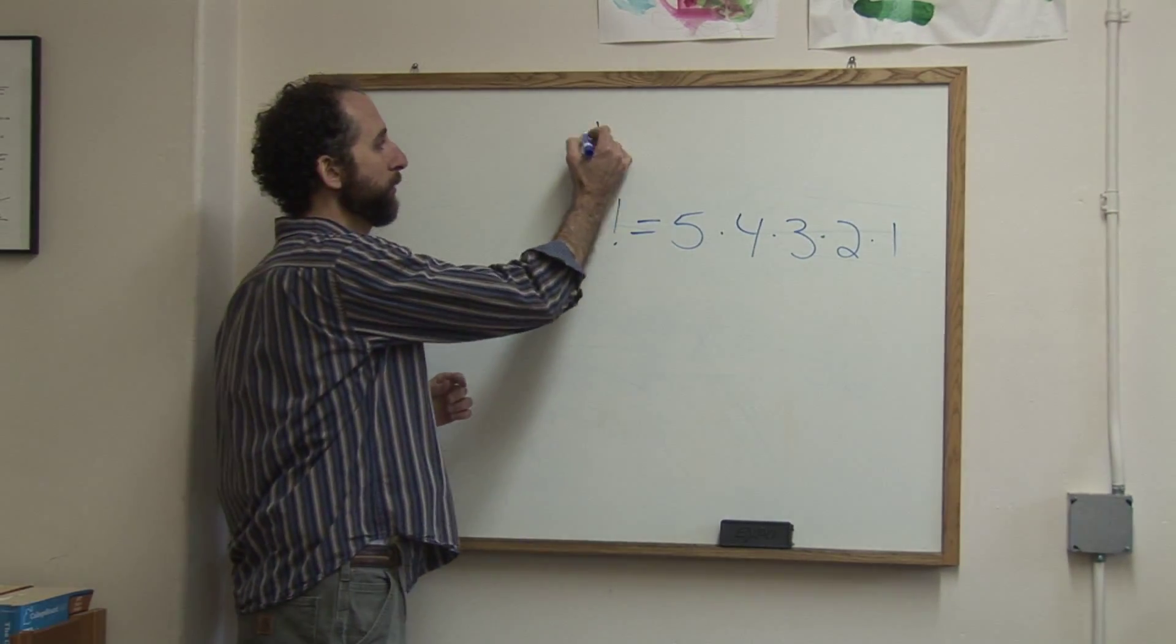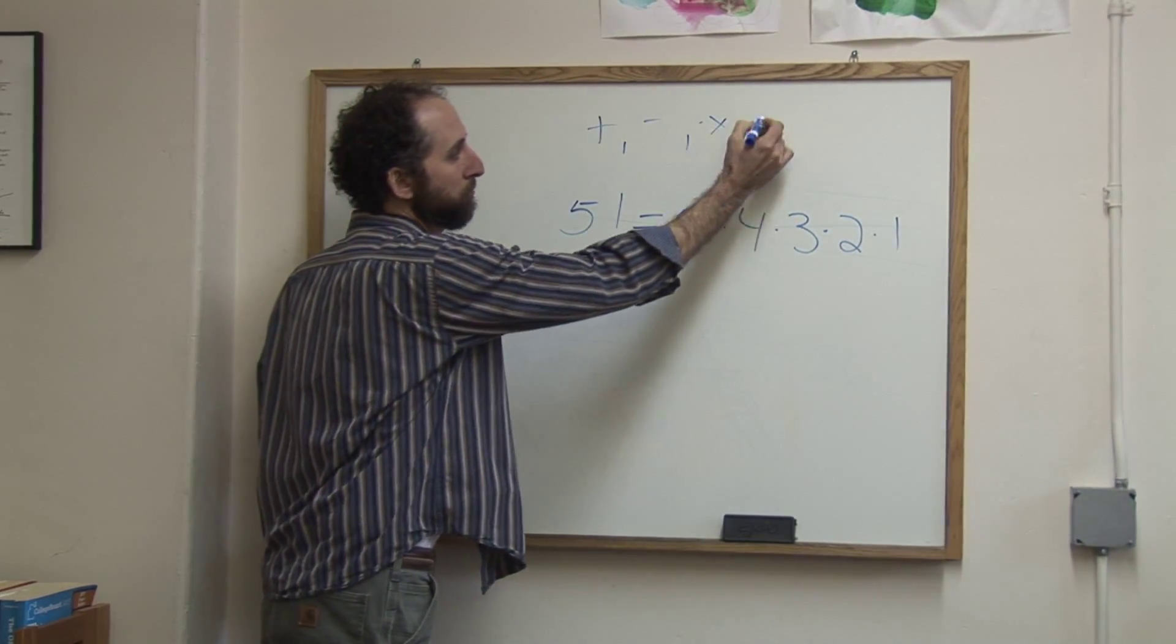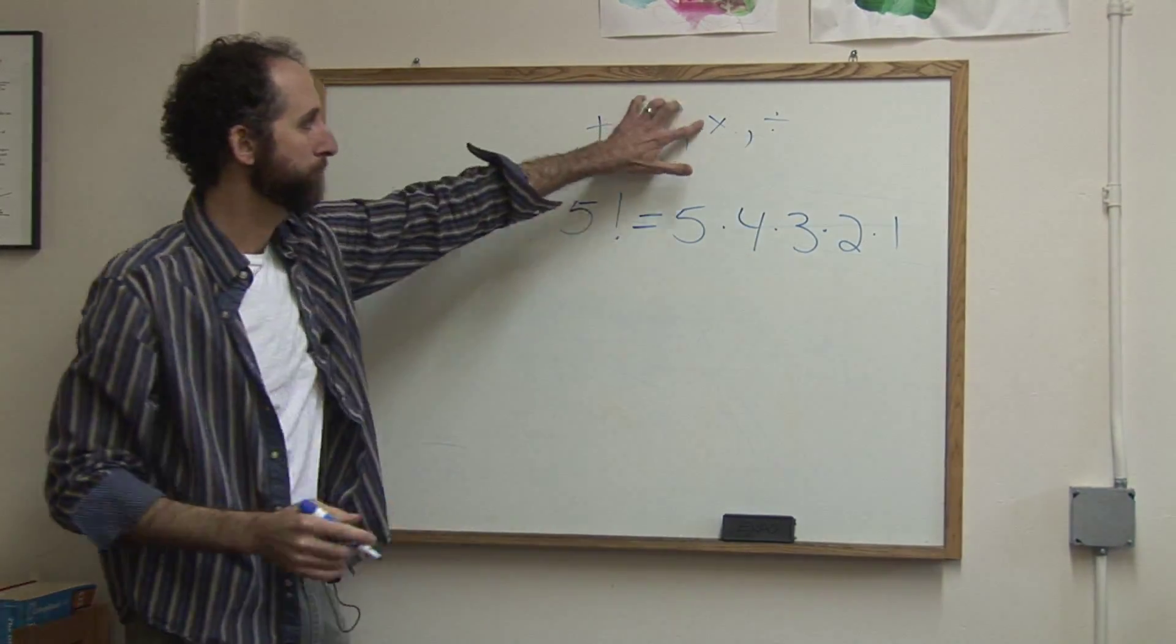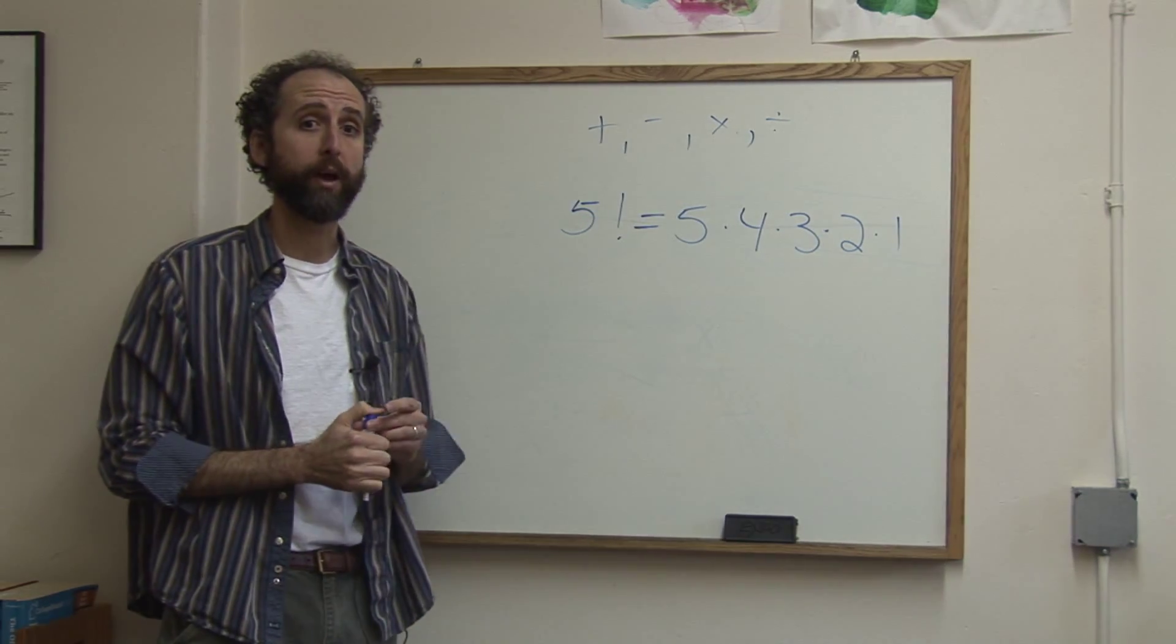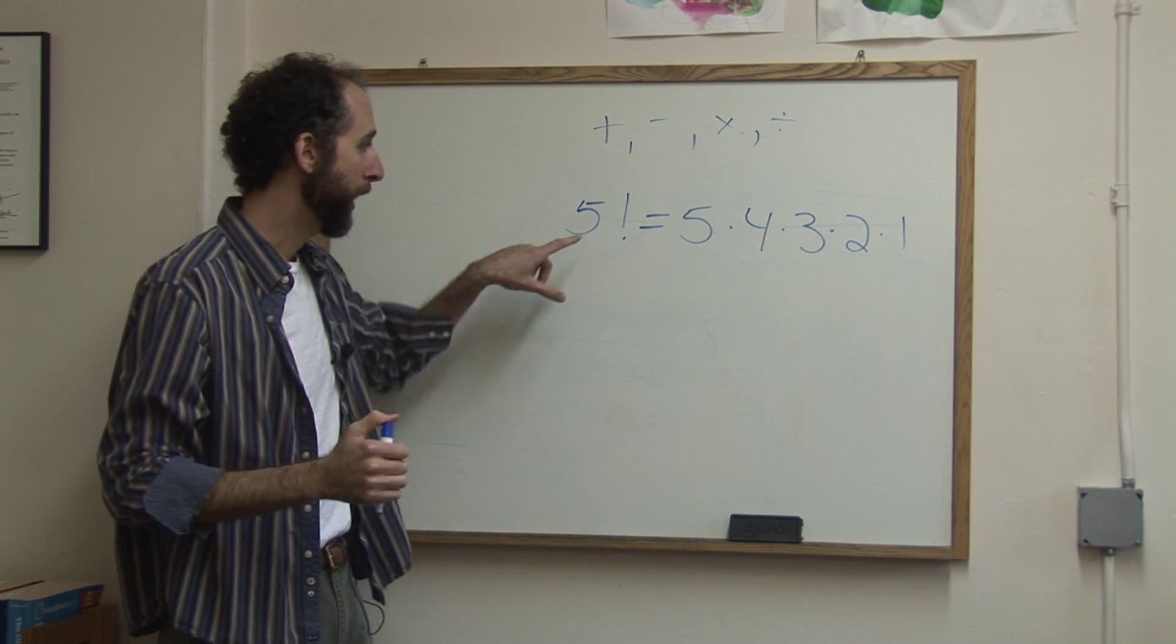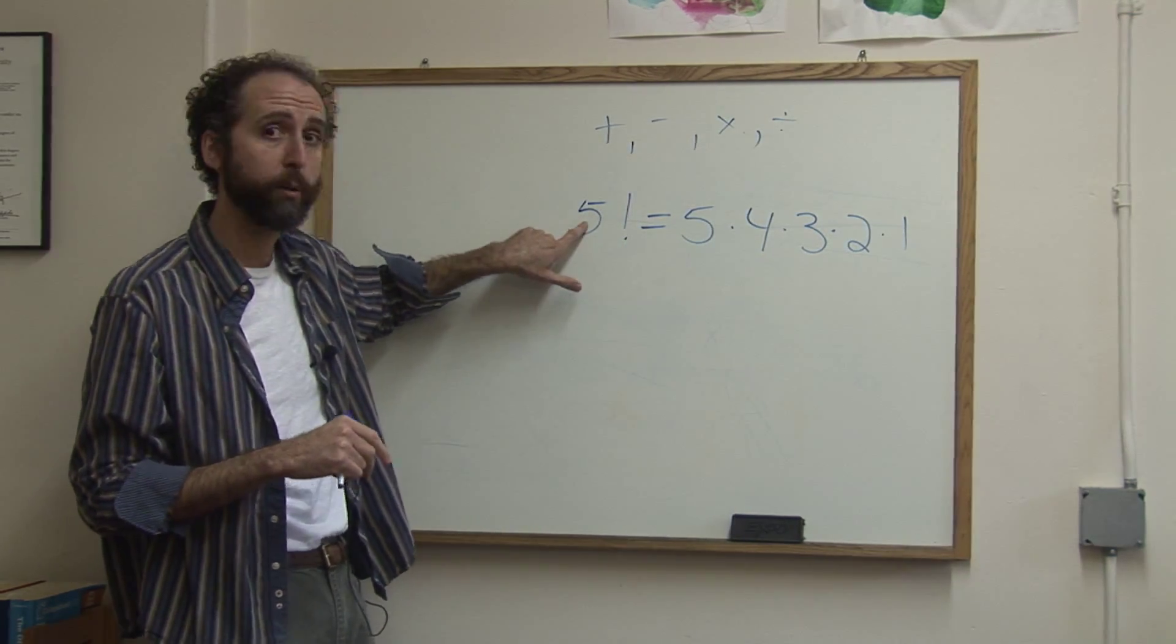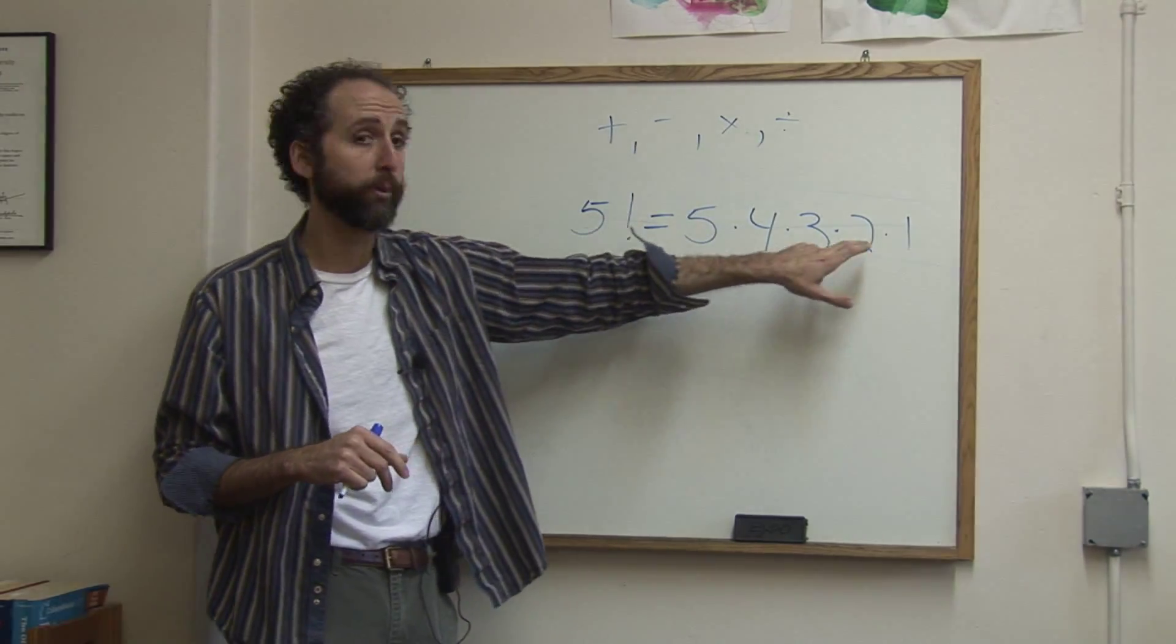Since you were young, you knew plus and minus and times and divide. And factorial is just another symbol like that. It's no harder necessarily. It's just you don't learn it until you're older. And any time you see this symbol, literally all it means is multiply this number times every positive integer below it.